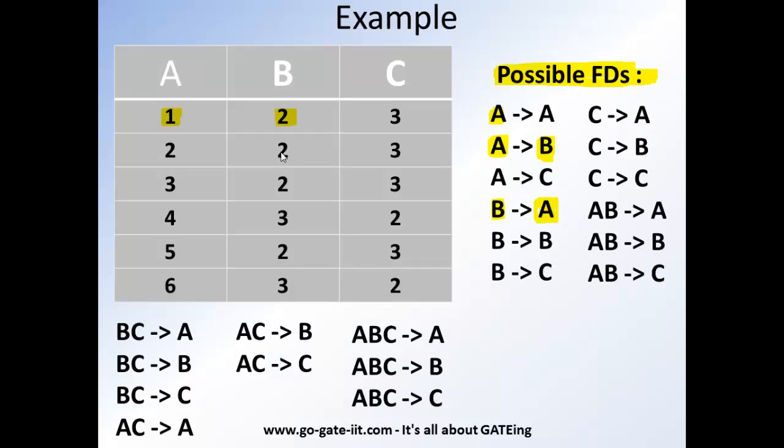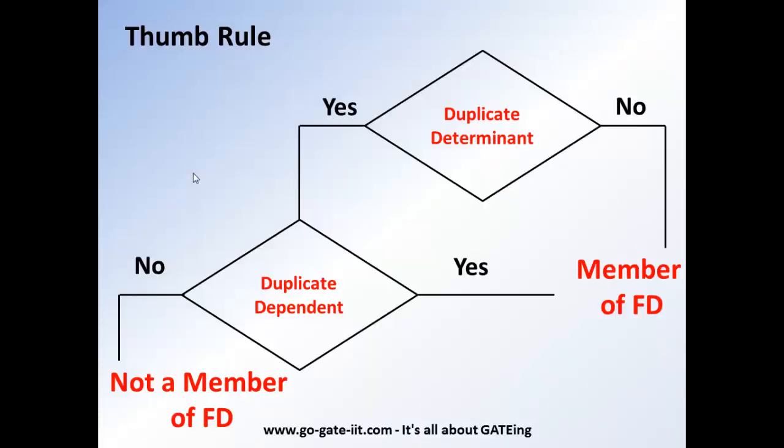Again, this is a duplicate determinant which is having a non-duplicated dependent. So that means from the flowchart it says it is not a member of FD.